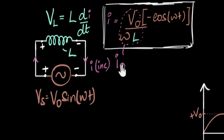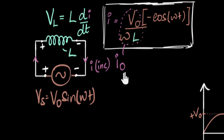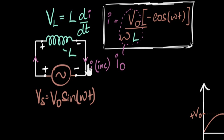An interesting thing to note — which we'll explore in a future video — is that even though there is no resistance in the circuit, our current is limited. There's a maximum value, which is very interesting. That means inductors also sort of provide some kind of resistance to the current. But how and why — we'll talk about all of that in future videos separately.